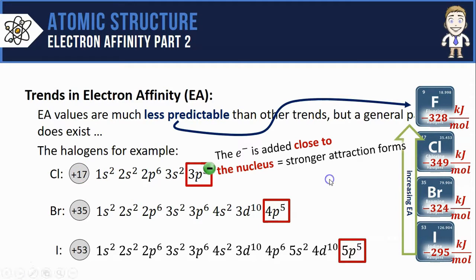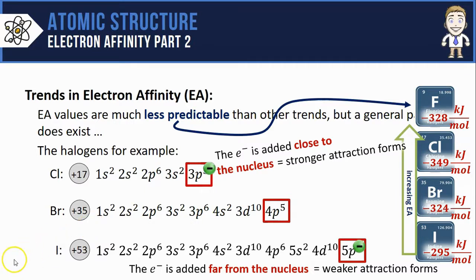Compare that to adding an electron to an iodine atom where it has to go into the 5p orbitals. Those 5p orbitals are much farther from the nucleus so a much weaker attraction forms.